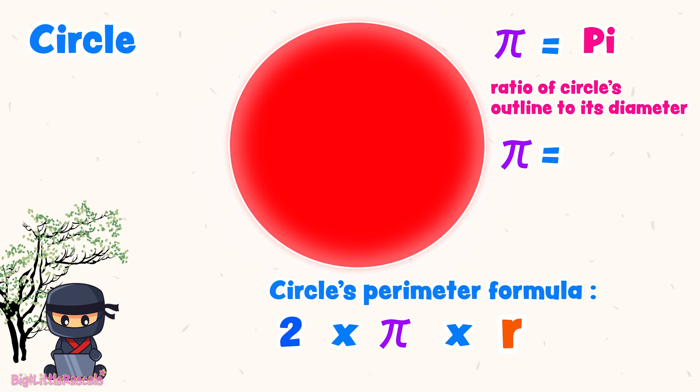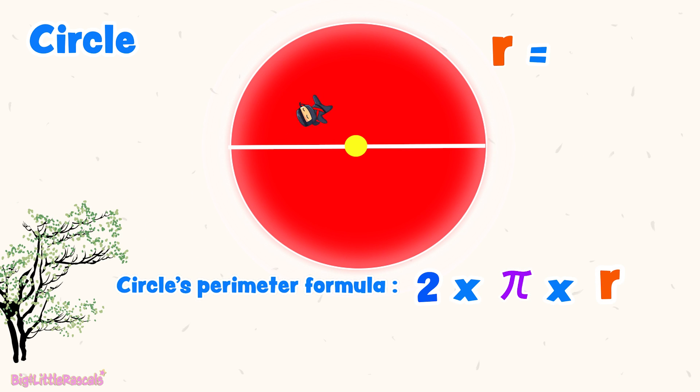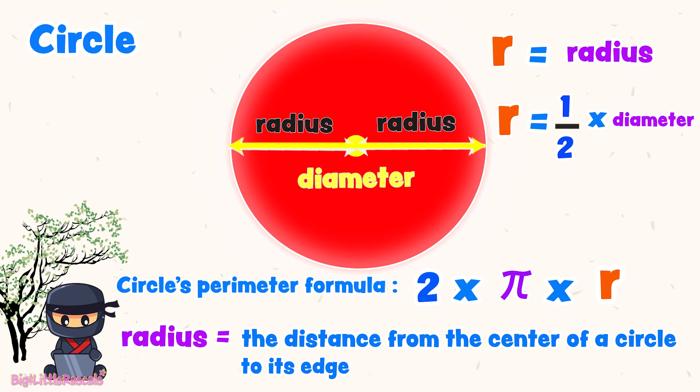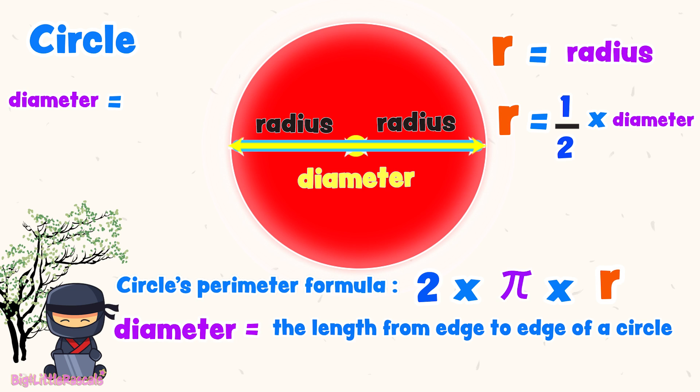We use pi value as 3.14. Yes! This pi value is an approximate number. And it is constant. Means that the value is always the same. Whenever we use pi, the value is an approximate 3.14. R in the formula means radius. See the circle? The radius is the distance from the center of a circle to its edge. Radius is a half length of circle's diameter. Diameter is the length from edge to edge of a circle through its center. 2 times circle's radius length is equal as circle diameter.